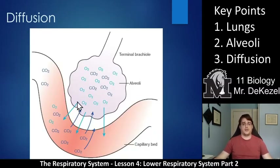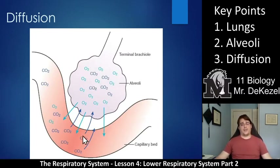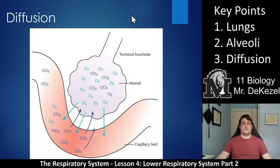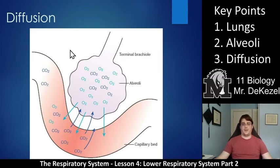Here's how diffusion works: the blue arrows represent oxygen — in the alveoli we have much more oxygen than in the blood vessel, so O2 moves into the blood vessel to be carried away. In the capillary we have much more CO2 than in the alveoli, so CO2 is pushed into the alveoli where it is expelled through the lungs into the atmosphere. It is very important to be able to explain exactly how this works.